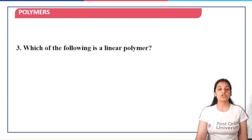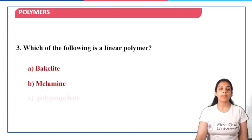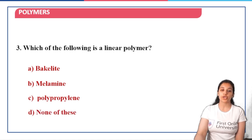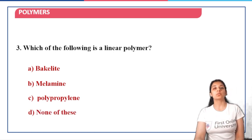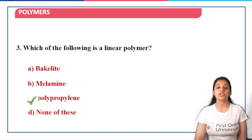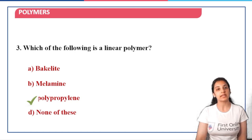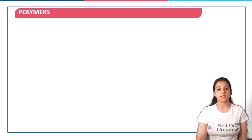Next: which of the following is a linear polymer — bakelite, melamine, polypropylene, or none of these? We have seen that bakelite and melamine are both network polymers. So option C, polypropylene, is the correct answer.